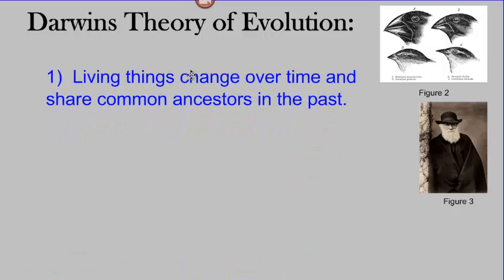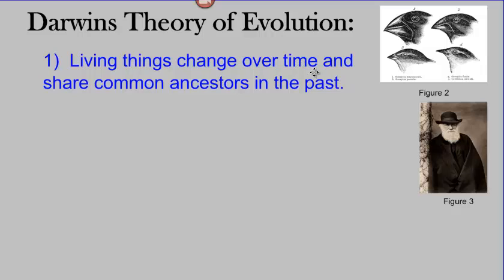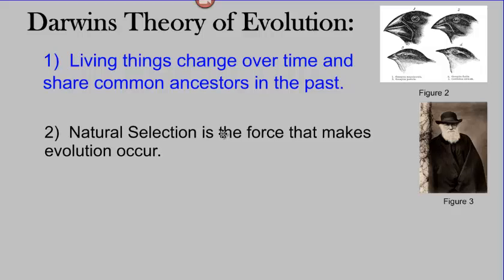Now, Charles Darwin's theory of evolution hinged on two main points. The first was that living things change over time and that they have a shared common ancestor in the past. So here's a picture of his finches. He said all these finches came from one ancestral finch and that they became new species as a result of a process, as a result of his second major point that he developed, which is that natural selection is the force that makes evolution occur. Now, Darwin wasn't the first to come up with the idea that living things change, but he was the first to come up with the idea that natural selection is a force that's capable of making that change happen.